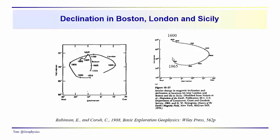When we look at the secular variations over here in Sicily — this is from Robinson and Carew's text — starting back in 1600, the geomagnetic north pole was almost in the same direction as the geographic north pole. It comes out to about 17 to 18 degrees east, and then comes back in 1965 to almost alignment again with the Earth's geographic north pole.